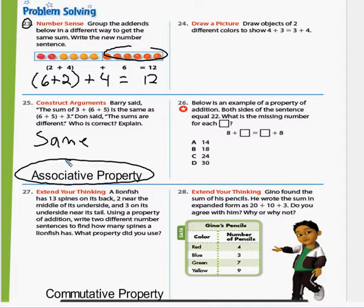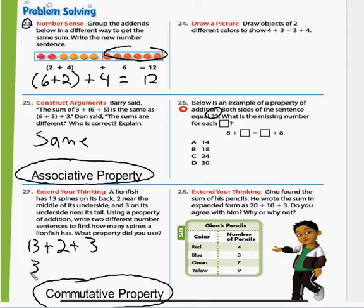And 27. A lionfish has 13 spines on its back, two near the middle of its underside and three on the underside near its tail. Use a property of addition, write two different number sentences to find how many spines the lionfish. What property do you use? I'm going to use the commutative property of addition, which basically says I can put the numbers in different orders and still get the answer. So I'd go 13 plus the two near its back, plus the three on the underneath side. Or I can just change the order. I could go from the underneath, underside, plus the two nearest tail, plus the 13. And that's 16, 17, 18. That equals, so that's 18 spines. I wrote it two different ways. I use the commutative property of addition.